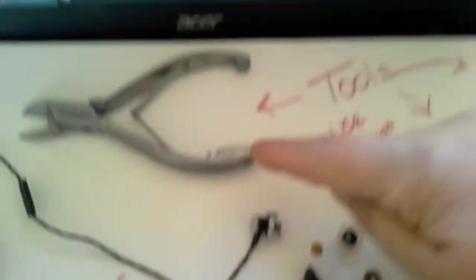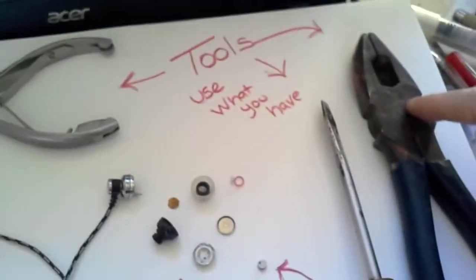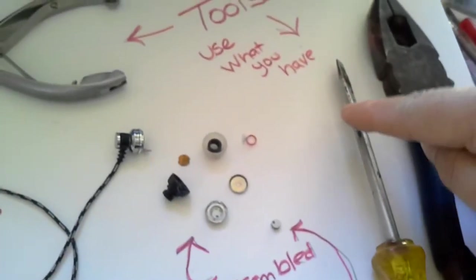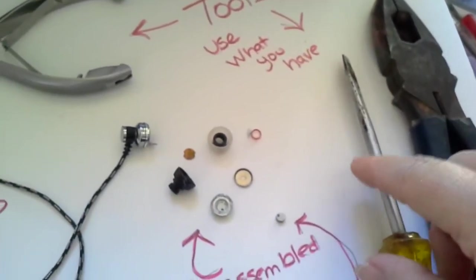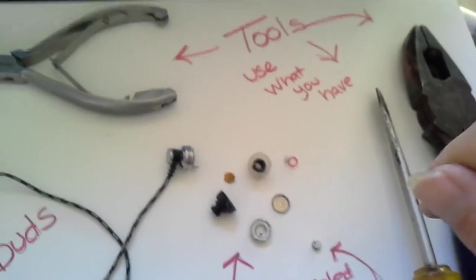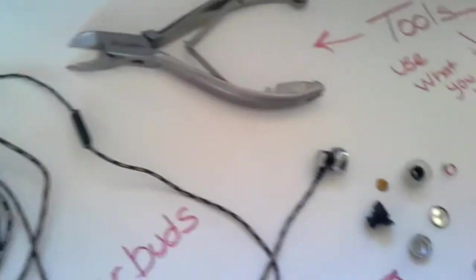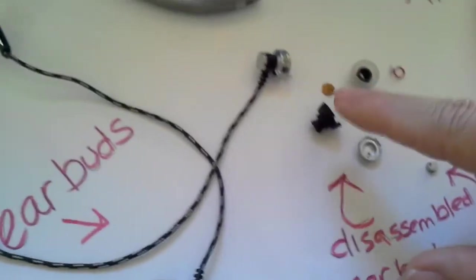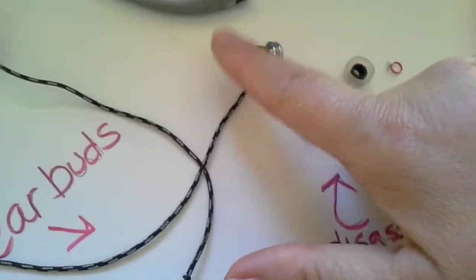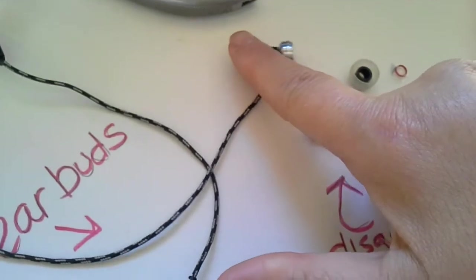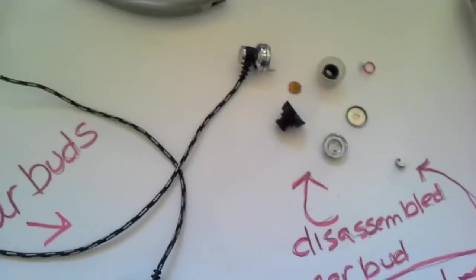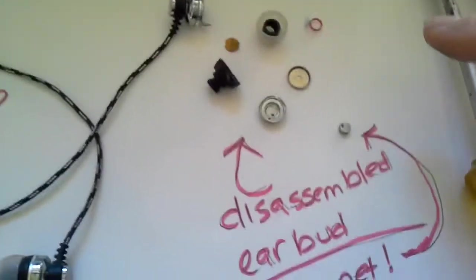So, if you use some tools that you have around your house, a pair of pliers works good, anything you can use to get these things apart, even some toenail clippers work, and use what you've got, and take the little earbud apart. And don't worry about breaking it because it's already broken. That's why you're using it.